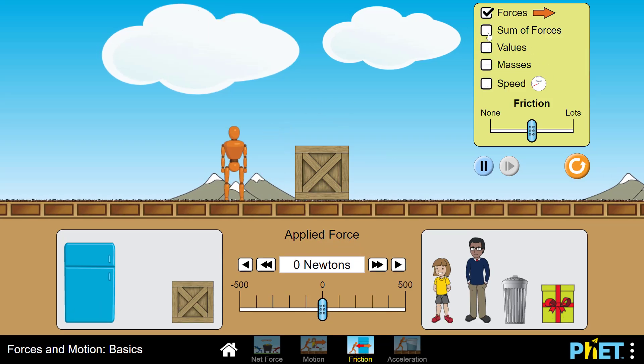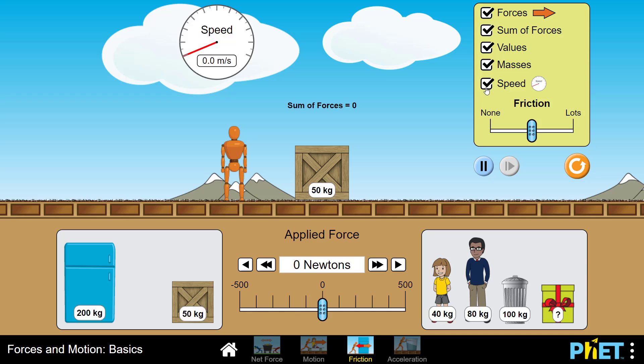Once again, click reset, turn on all of these options and now the goal is to walk up to this box and figure out the exact force needed to just set it in motion. Here goes.